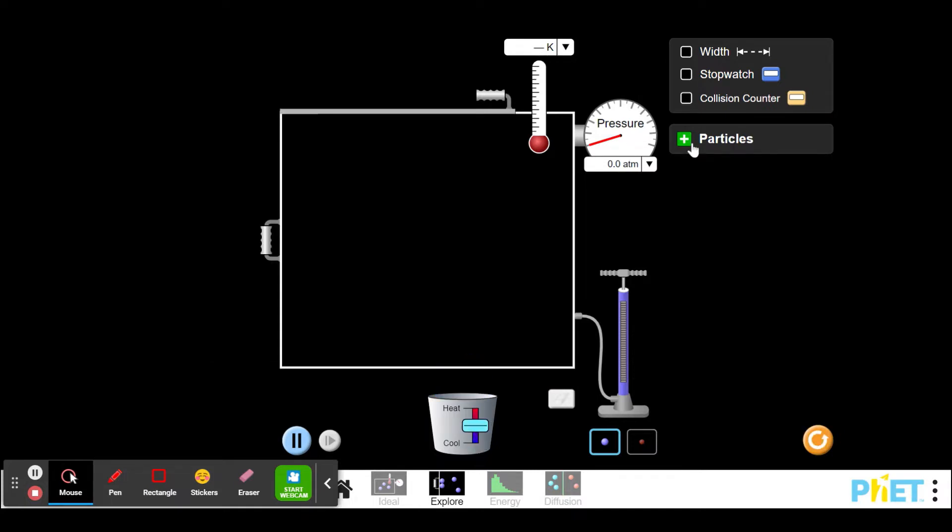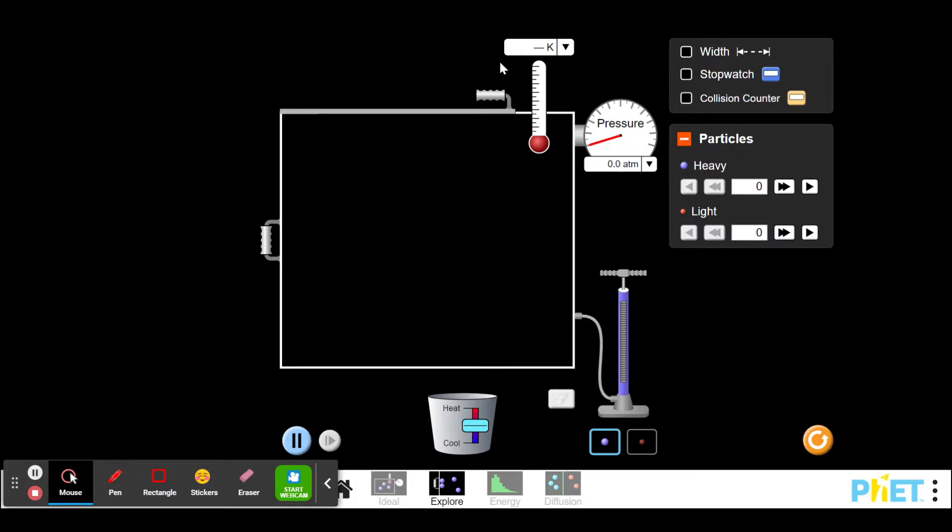You can see the temperature up here only changes if you've actually got particles in your tank. Right now it's at 300 Kelvin. You can also change that to degrees Celsius if you prefer. You can heat it up to increase the temperature, you can cool it down to decrease the temperature, and you'll just pick three different temperatures to choose.